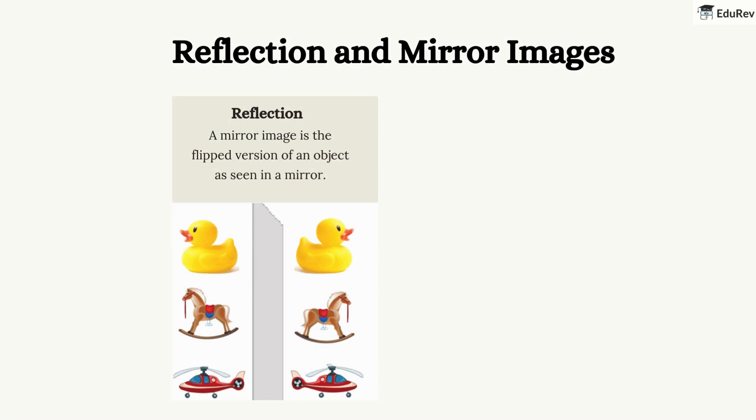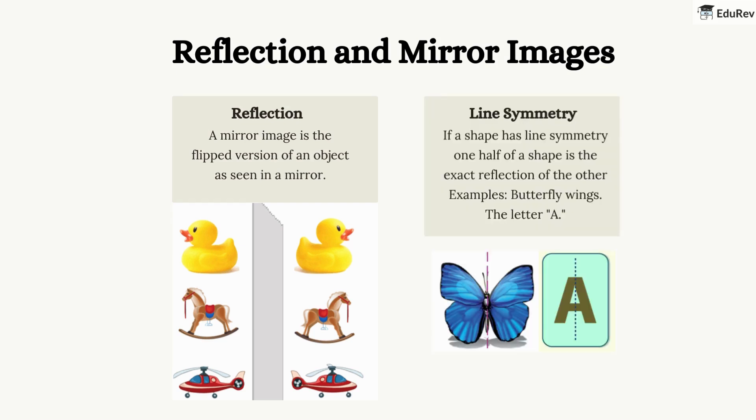Now, let's talk about reflection and mirror images. When you look at yourself in a mirror, you see a mirror image. It's a flip version of yourself, right? In math, we also study mirror images. If a shape has line symmetry, one half of it will be the exact reflection of the other. For example, the wings of a butterfly or the letter A.